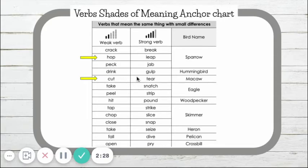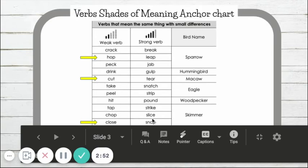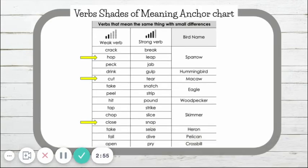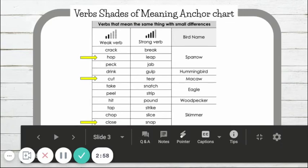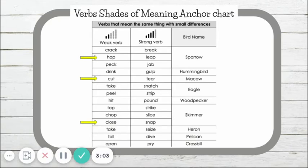Good job! Let's try cut or tear — a macaw might cut or tear with its beak. Act out these verbs. Good job! Let's try close or snap. In our text we learn that a skimmer uses its beak to glide through the water and then it closes or snaps its beak shut on fish. Show me how you would close or snap your beak.